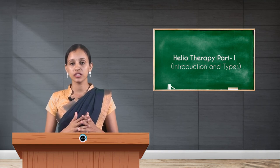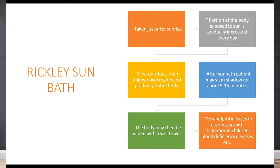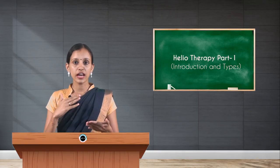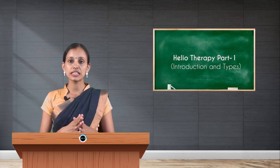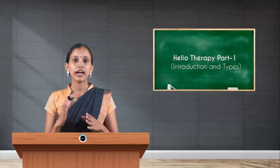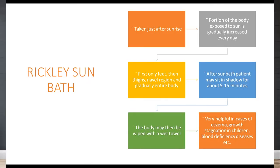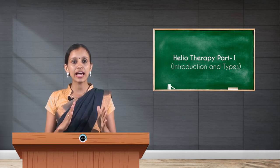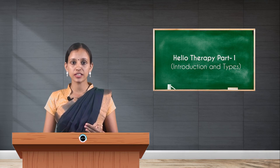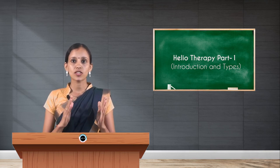The next type is reclase sunbath, where the portion of the body is exposed gradually — not all at once. Exposure starts from the feet, then up to the thighs, then the navel region, and then gradually the entire body. After the sunbath, the patient sits in the shade for about 5 to 15 minutes and can wipe the body with a wet cloth. It is very helpful in cases of eczema, throat stagnation in children, and blood deficiency diseases.